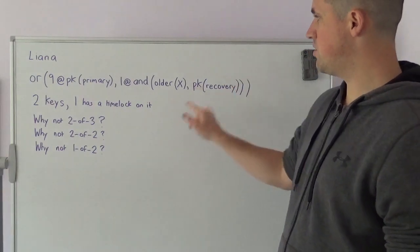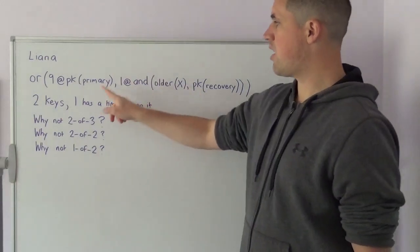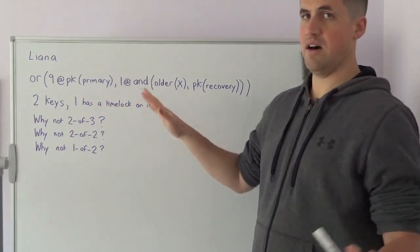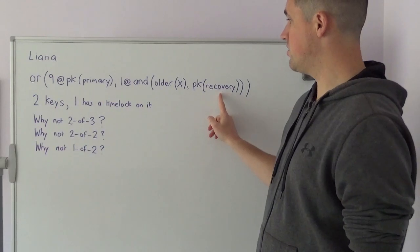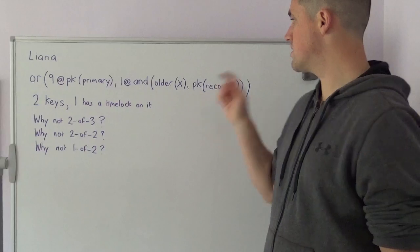There are two keys here: there's a primary key and a recovery key. The primary key can be used at any time, and the recovery key can be used as long as the certain amount of time has passed, as long as the time has expired.